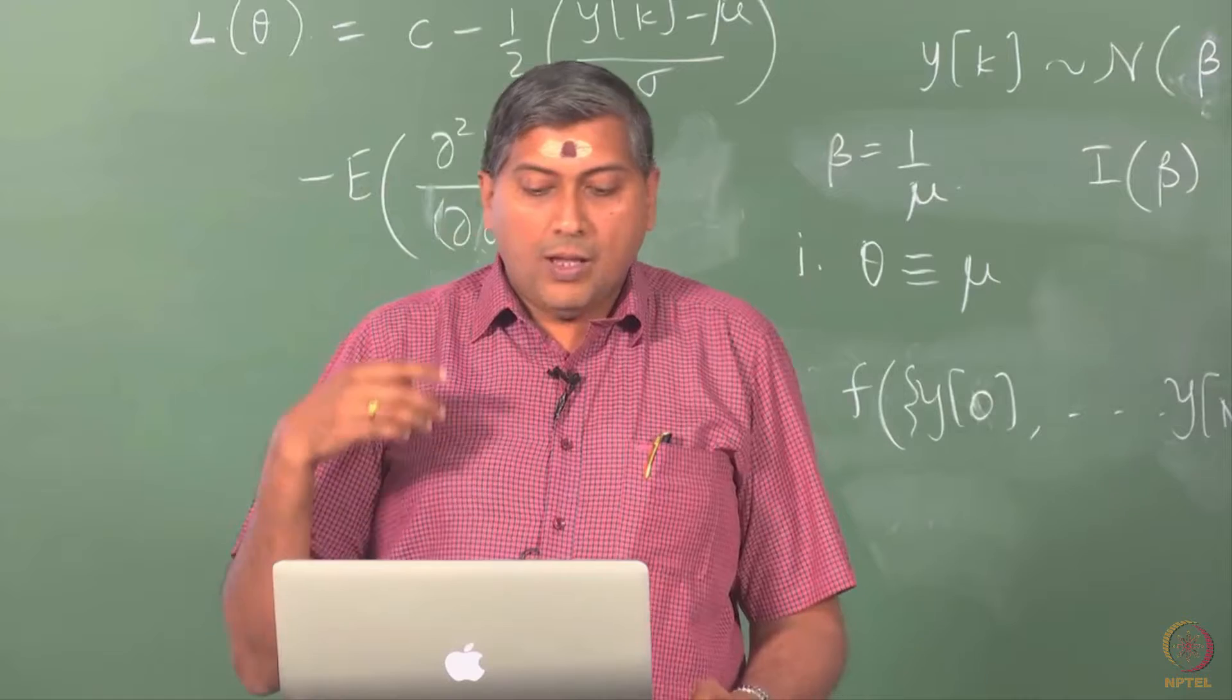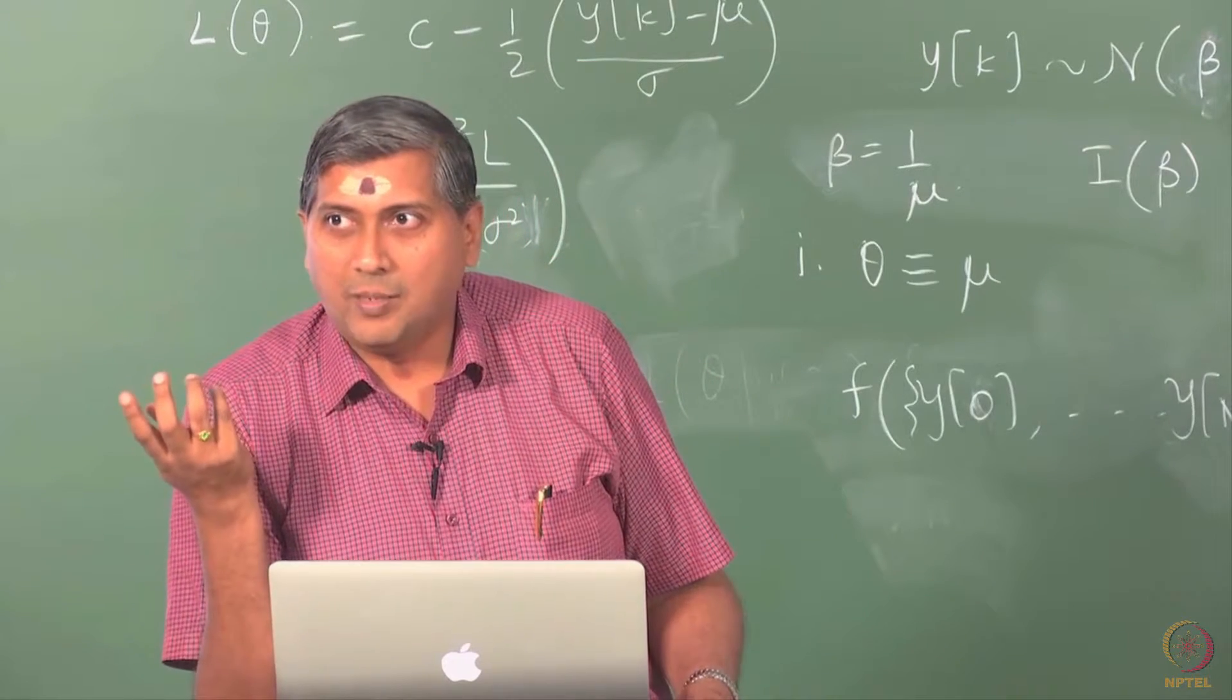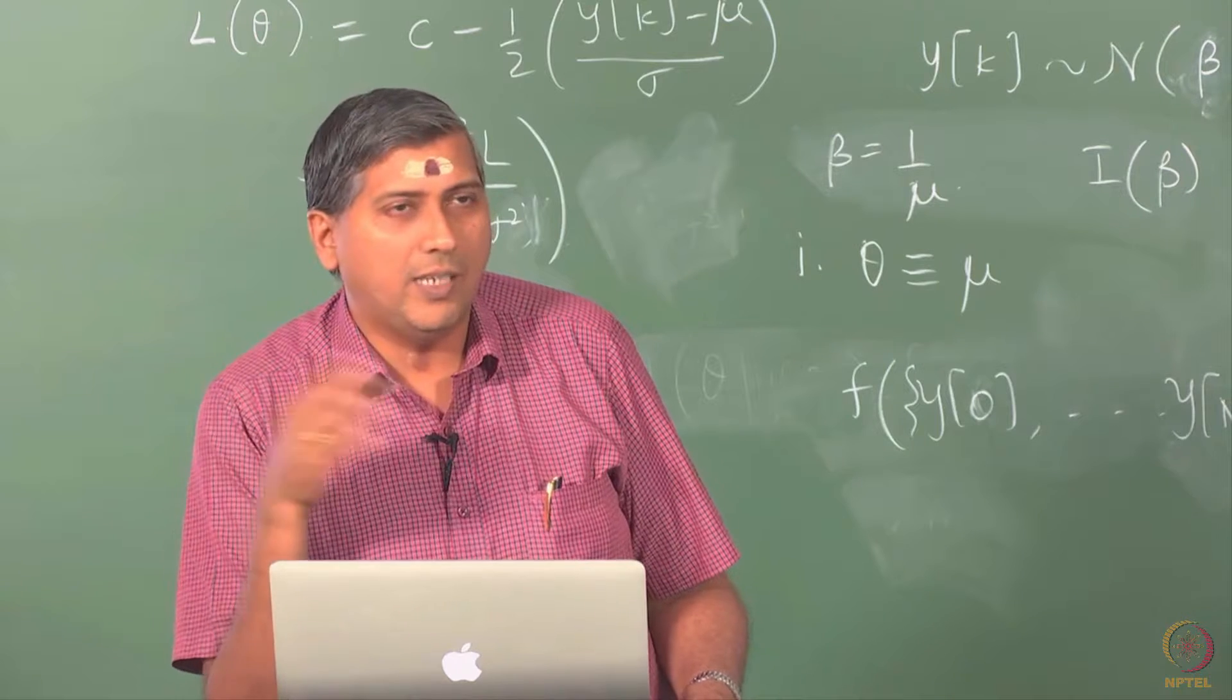Now, the square root of this variance is called the standard error in any estimate. That is a standard. What is the difference between error and standard error?